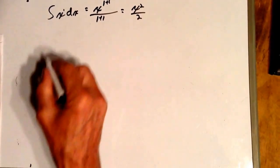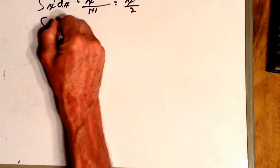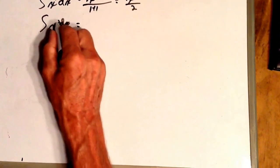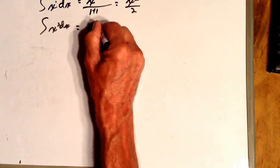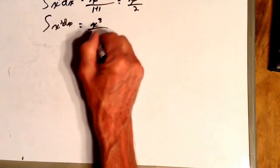What about the integral of x squared dx? Well, you add 1 to that 2, equals x to the 3 divided by 3.